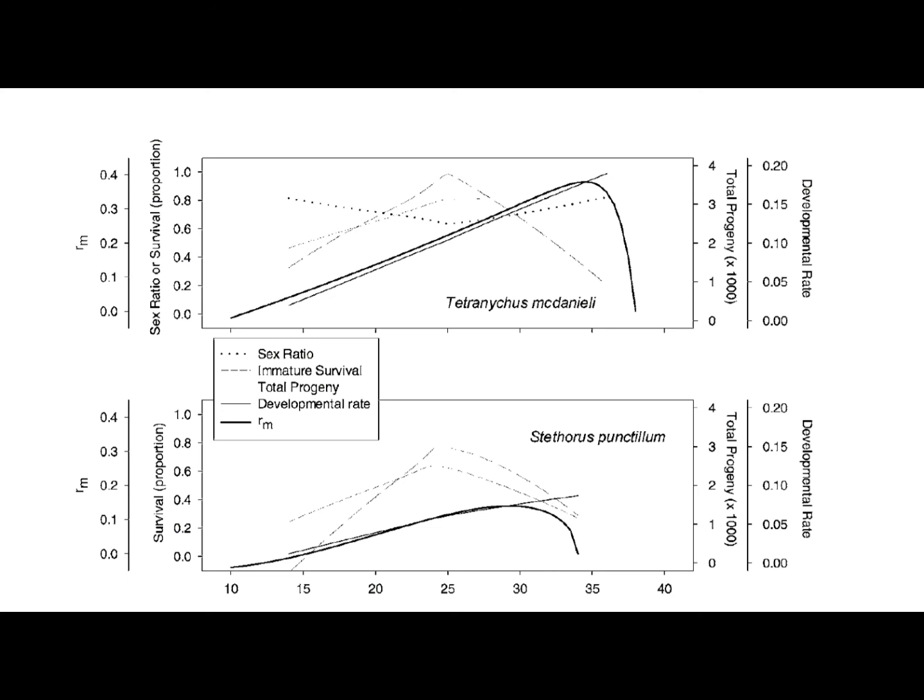In other words, if the spider mite pressure is in the low thousands, and the temperature isn't too hot, a Stethorus punctilum population in the low hundreds is probably sufficient to destroy it, as long as there aren't too many additional complications.